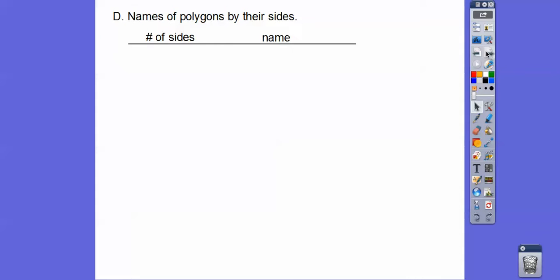Squares are our regular quadrilaterals, because all the sides are equal on a square, and all the angles are 90.